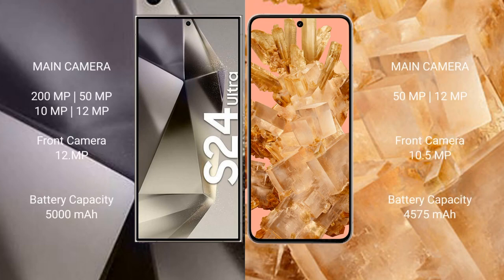Samsung Galaxy S24 Ultra features a quad rear camera setup: 200MP plus 50MP plus 10MP plus 12MP, with a 12MP front camera. Google Pixel 8 features a dual rear camera setup: 50MP plus 12MP, with a 10.5MP front camera. Samsung Galaxy S24 Ultra has a 5000mAh battery with 45-watt fast charging support.